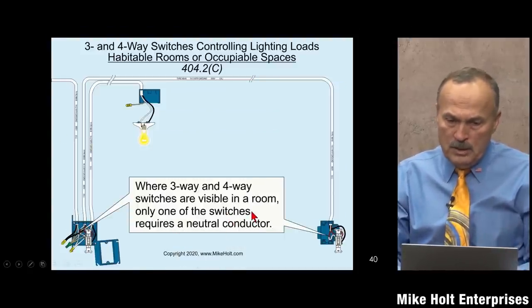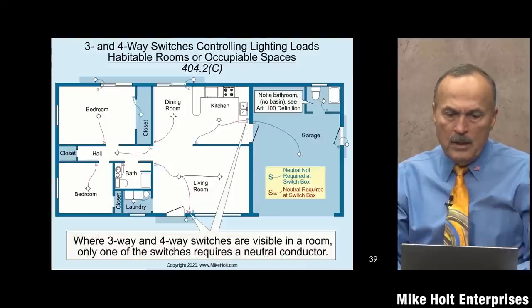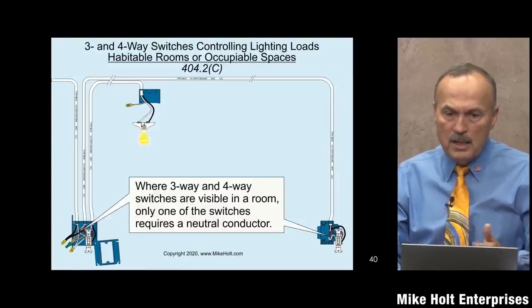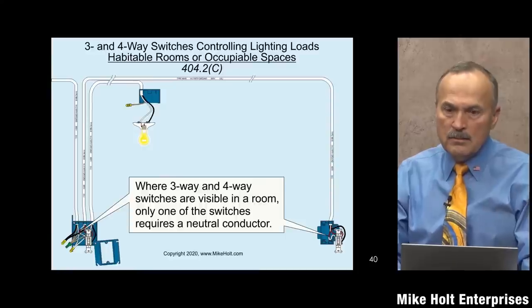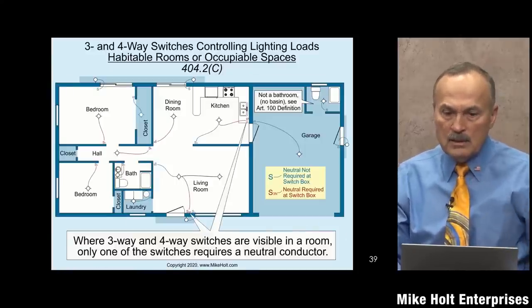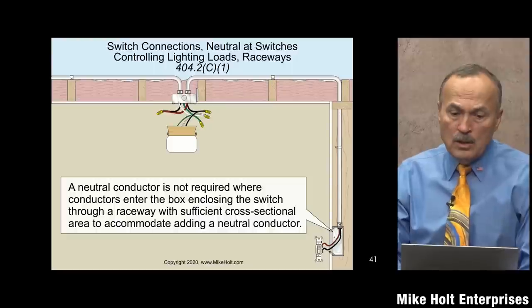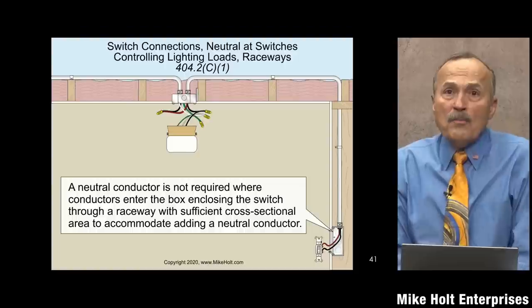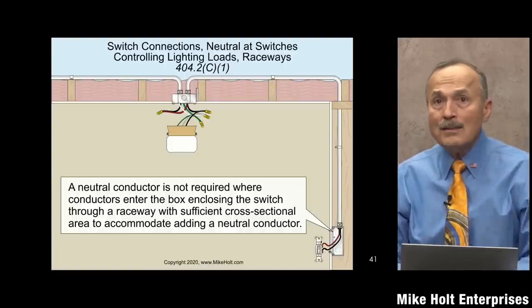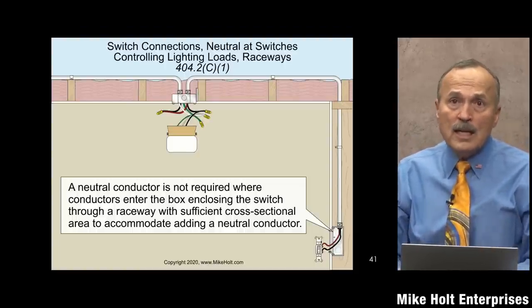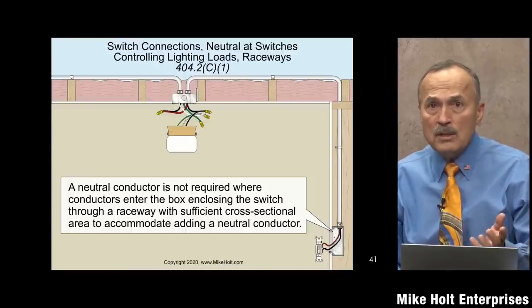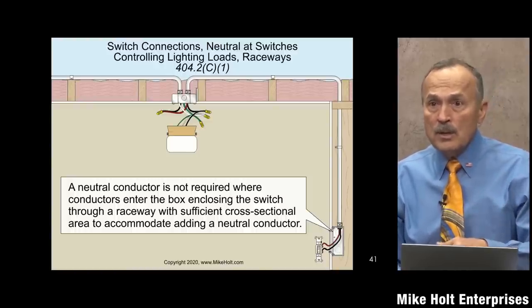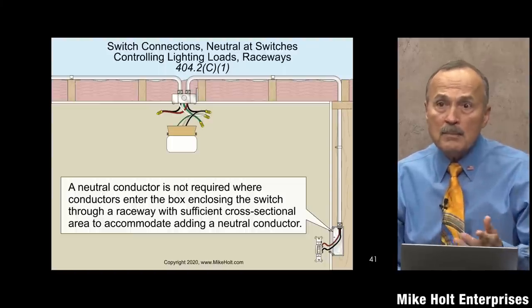Also, a neutral is not required if the wiring is installed in a raceway system. The logic is: if it's wired in conduit, you can pull in a neutral conductor later when you actually need it. So if you're in a raceway system, you don't need to pull the neutral to the switch initially — you can add it later whenever a neutral-requiring switch is installed.